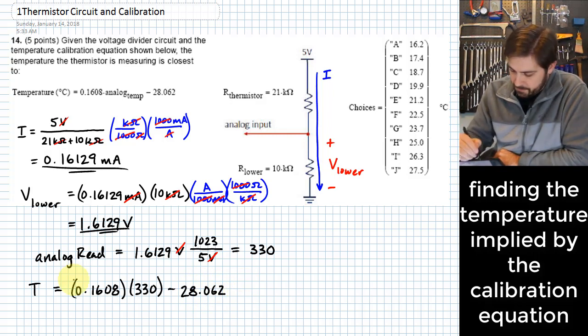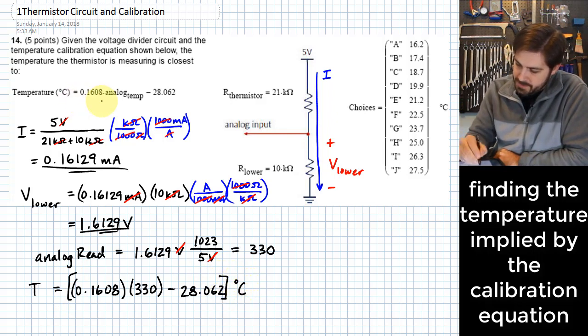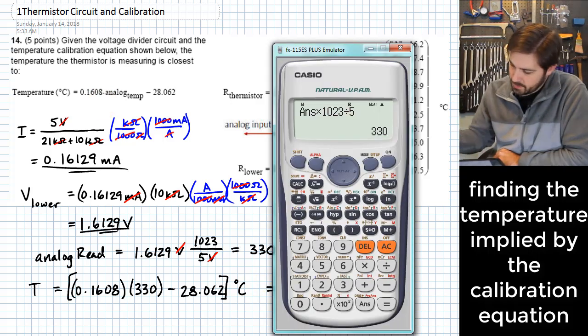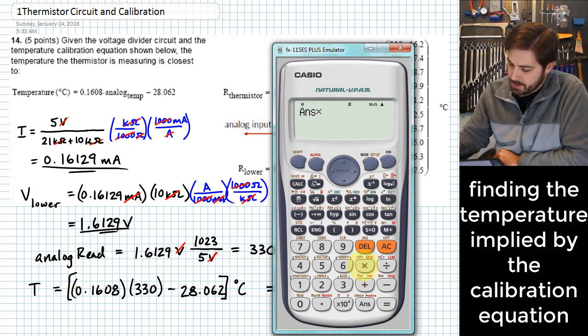And the units that are going to come out of all of this are going to be in degrees C, because that's how this equation is set up. So 330 times 0.1608 minus 28.062.